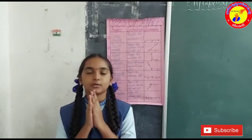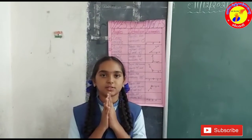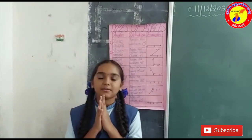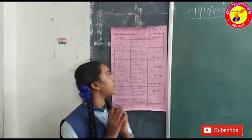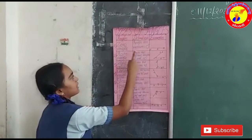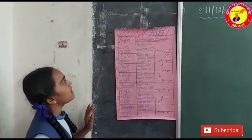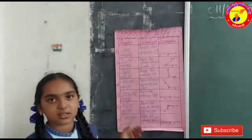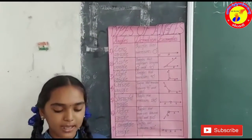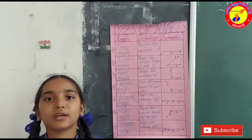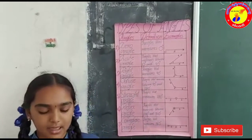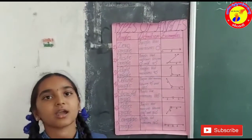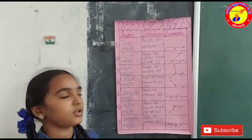Good morning everyone. My name is Xtanger Retia. I am studying Sun-Standard. Today I am explaining about types of angles. An angle is a figure formed by two rays.